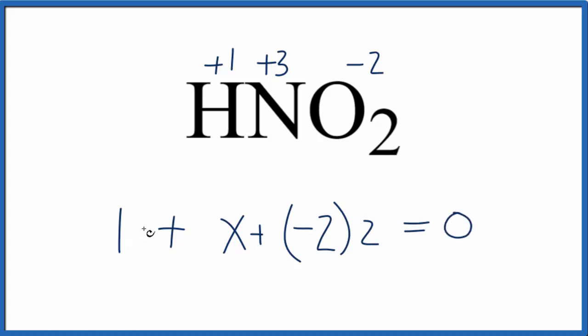So we'd have one plus a minus four, that gives us a minus three, and then to get rid of that minus three I'll add three to both sides and that'll give me X equals plus three, which is the oxidation number for nitrogen that we found earlier.